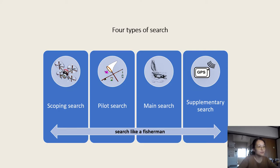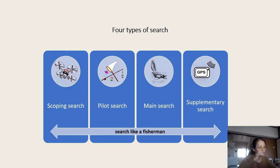There are four types of search you will sometimes encounter in your systematic literature review. They are scoping search, pilot search, main search, and supplementary search.